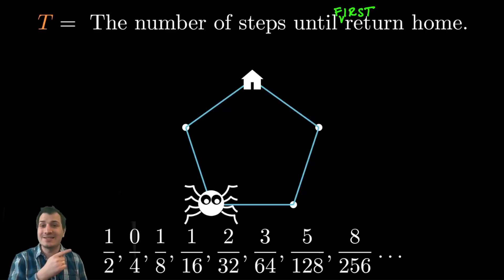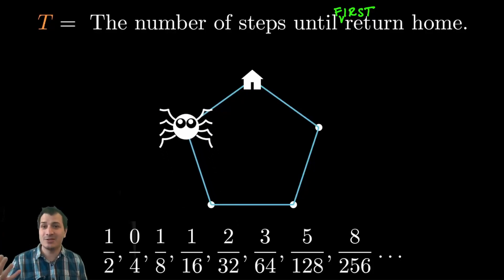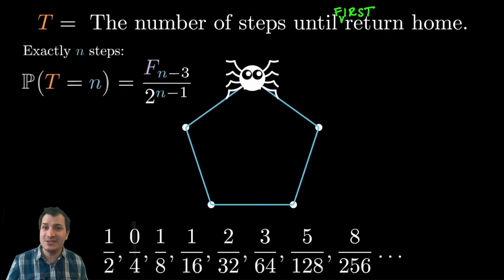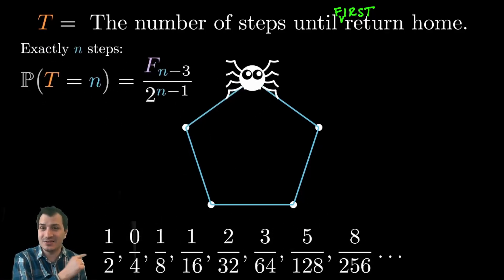He's going to walk around for some amount of time, and at some point he's going to step back on his house, and then his walk is over. T is a random variable, because he's going to spend a random amount of time walking around before he ends up at home. What is the distribution of T? It turns out it's exactly these numbers — the probability it took him exactly some number of steps is exactly this sequence of fractions.